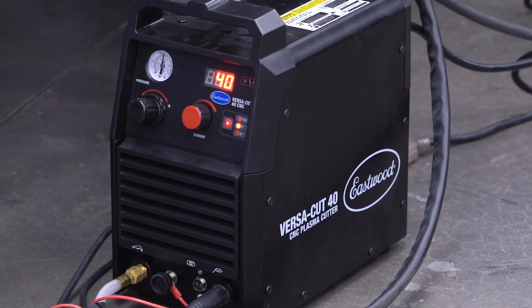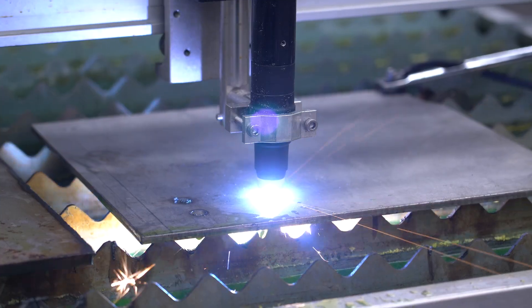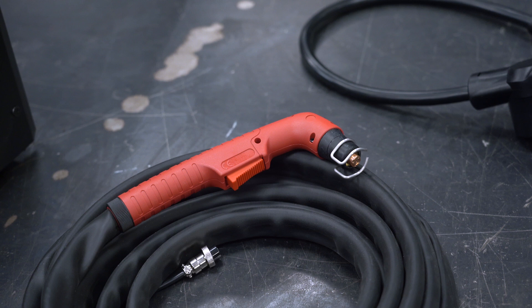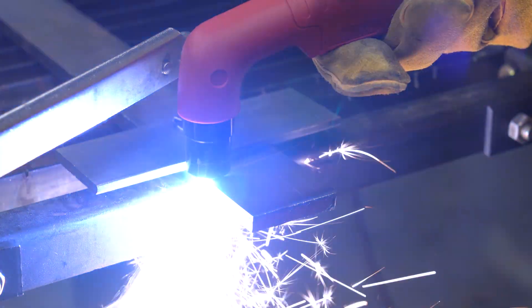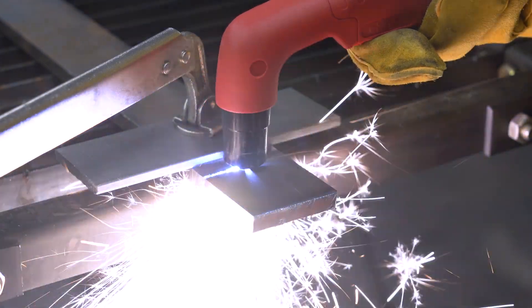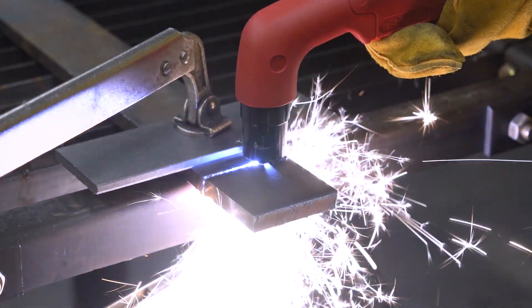We rate the VersaCut 40 CNC at 1 1⁄4 inch max cut thickness on a CNC table but 3 1⁄8 inch for hand cuts. Why is that? Well when you're hand cutting it's easy to stop in place and let the arc catch up. The CNC table doesn't know to do that. It wants to move at a constant pace.